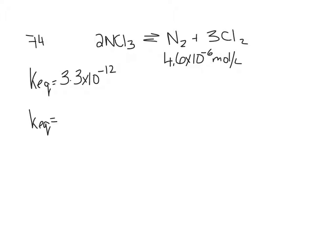Okay, so what is our K expression equal to? You need to know how to do this. 3.3 times 10 to the negative 12 equals the concentration of N2, bracket concentration of chlorine with the swollen root, all over concentration of NCl3 to the 1.2. So there is our K expression.